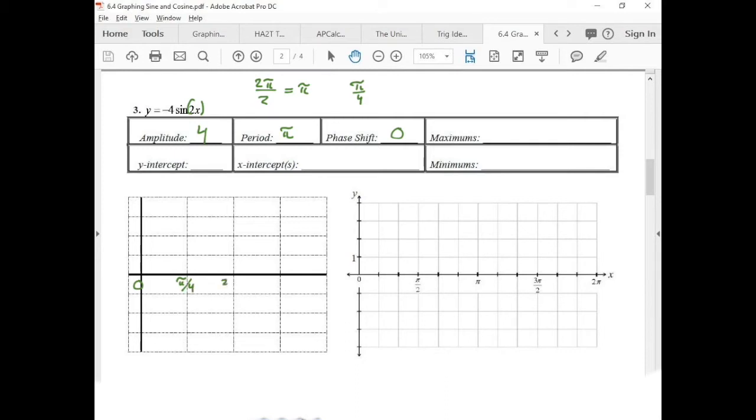And then we add π/4 again, we get 2π/4. Then we add π/4 again, we get 3π/4. Then we add π/4 again, we get 4π/4. Now this one simplifies to π/2. This one simplifies to π.